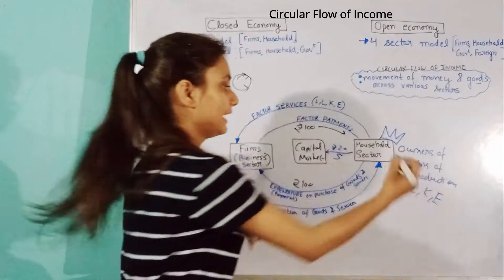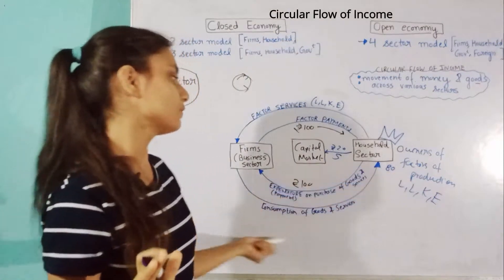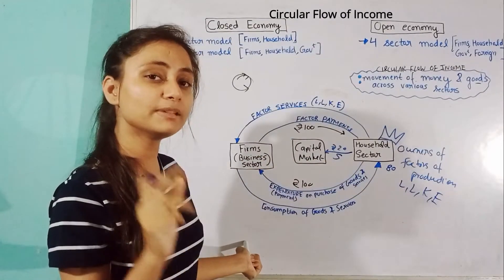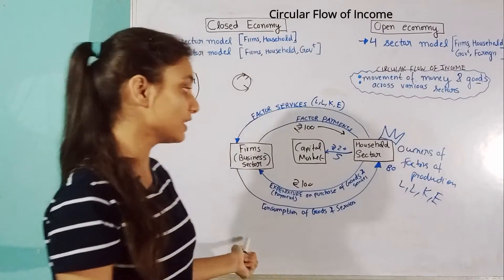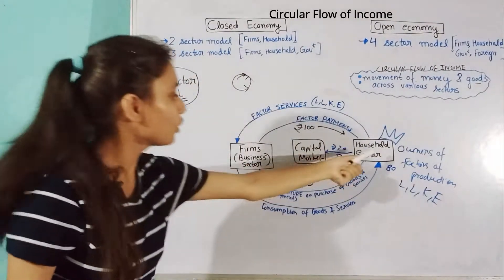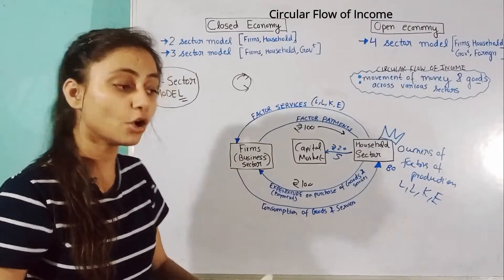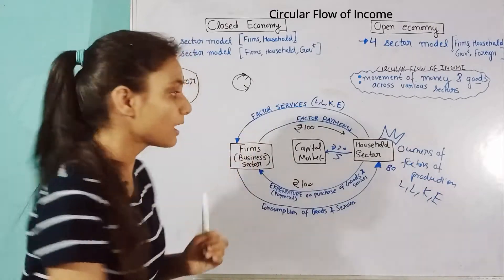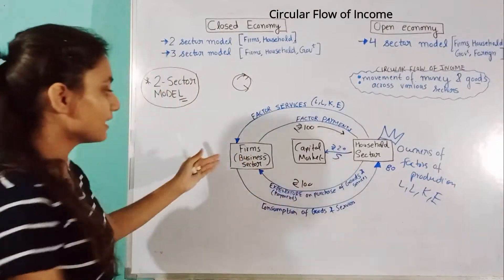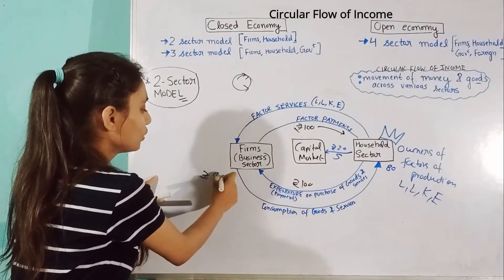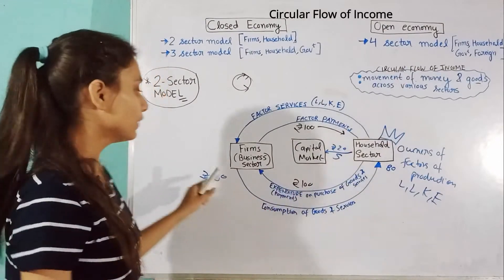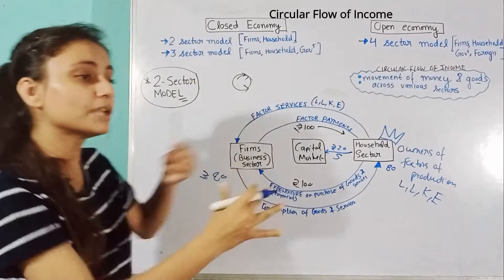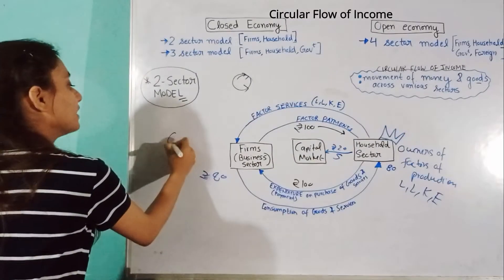If the household saved Rs. 20, they only have Rs. 80 left to spend. So they will buy goods and services worth Rs. 80 only. You can see that the income was Rs. 100 but the expenditure in the economy is only Rs. 80. This means the economy will contract. When it was Rs. 100 flowing, production was Rs. 100. But now the business sector only receives Rs. 80, so they reduce production to Rs. 80. We call this contraction.